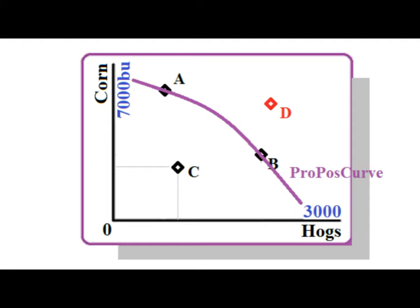We can produce at point A, or at point B, or any combination along the curve, or any point below the curve. But no point above the curve is possible, like point D. That is beyond the capability of this economy.